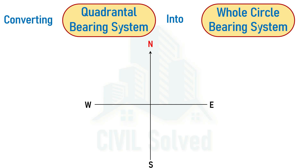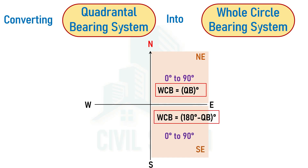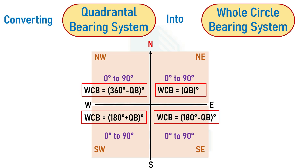To summarize the generalized equations for conversion of quadrantal bearing to whole circle bearing: if the line lies in the northeast quadrant, WCB = QB; southeast quadrant, WCB = 180 minus QB; southwest quadrant, WCB = 180 plus QB; northwest quadrant, WCB = 360 minus QB. This is all from this video — we discussed the conversion of bearing from one system to another. Thank you for watching.